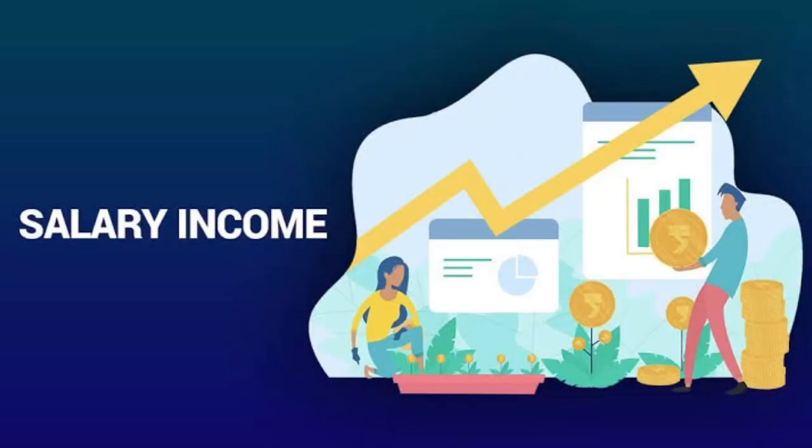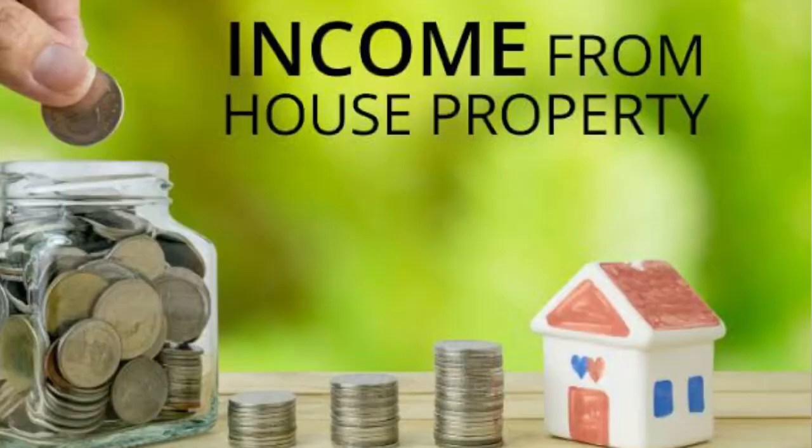Income from salaries covers any income received as an employee working in a company — whether private or government — so whatever income you receive as salary is one source. For house property: if a person has two houses and lets one out, then the rent received is considered income from house property.